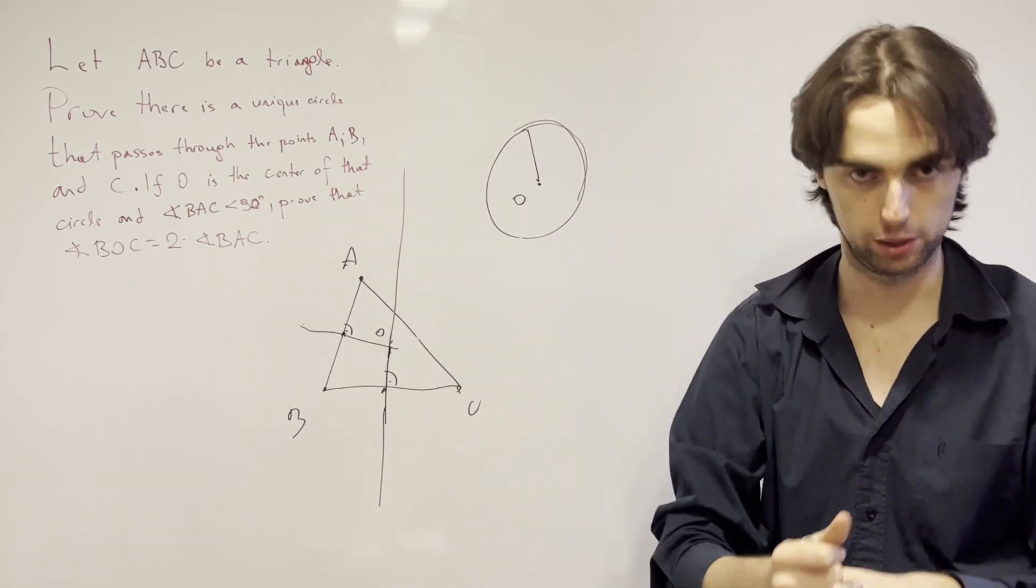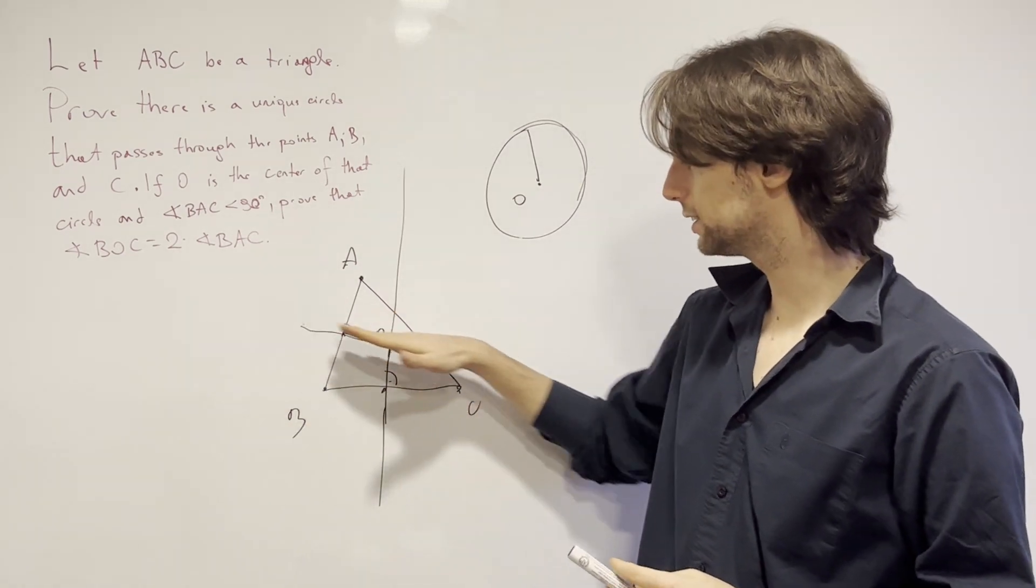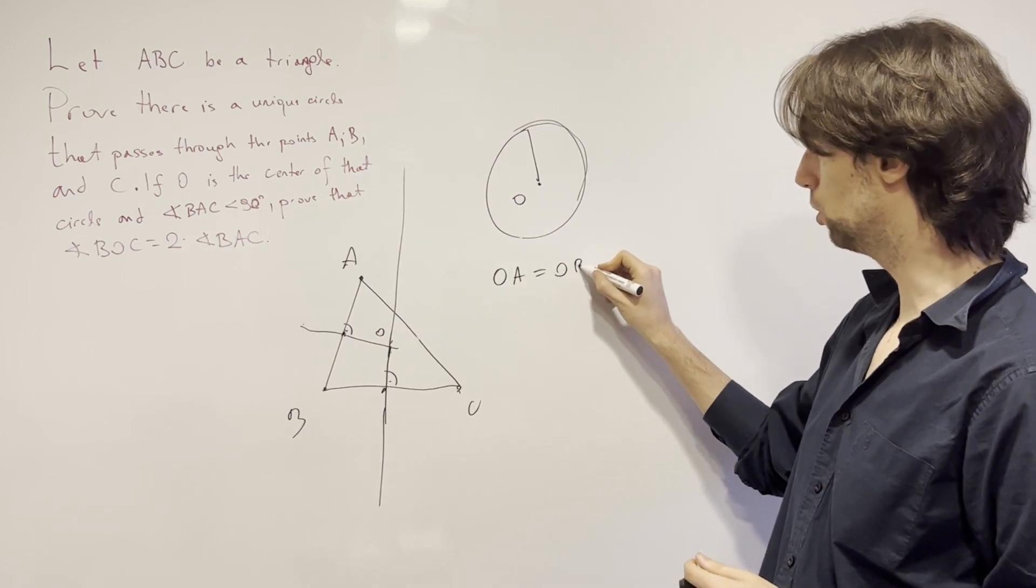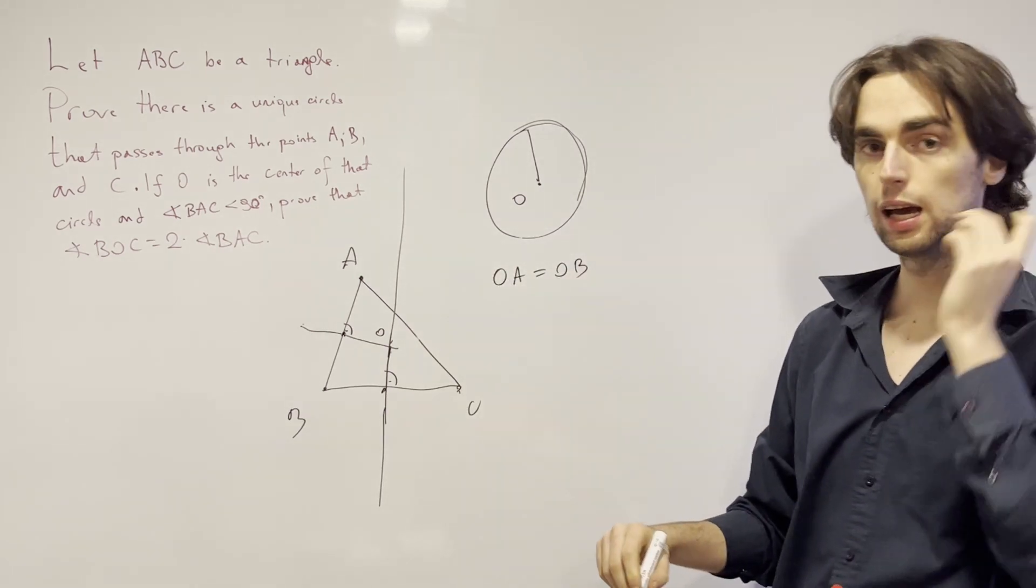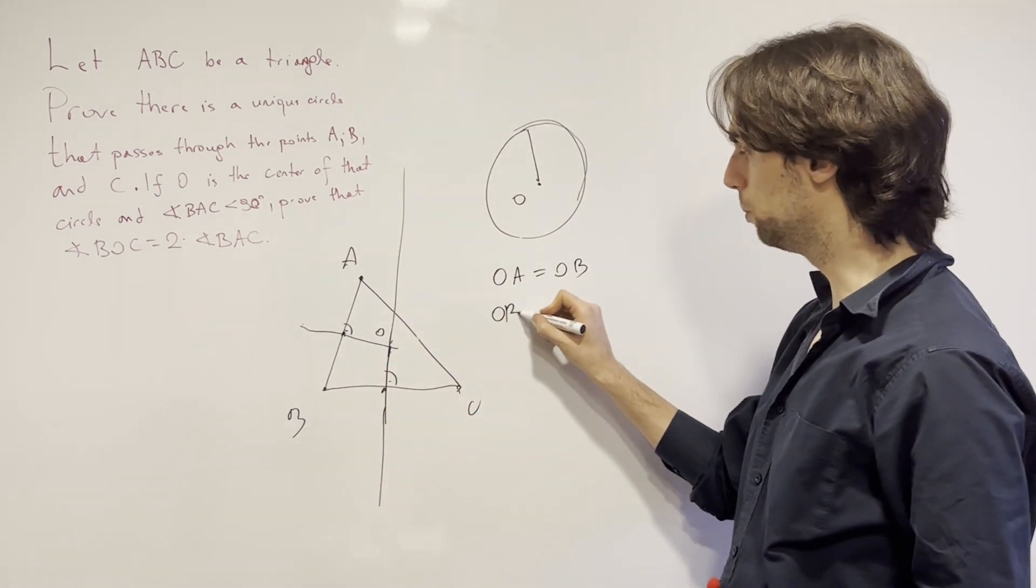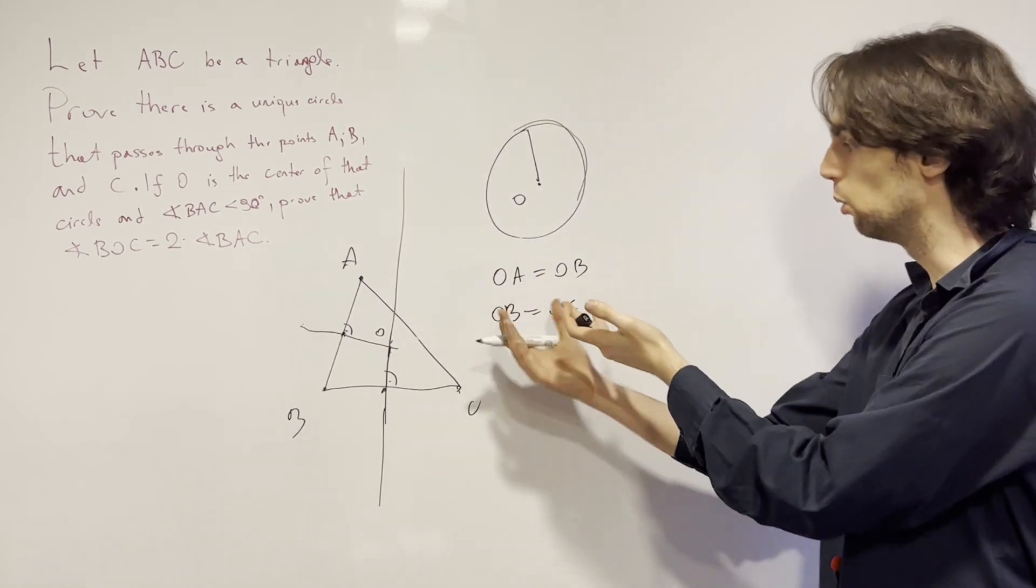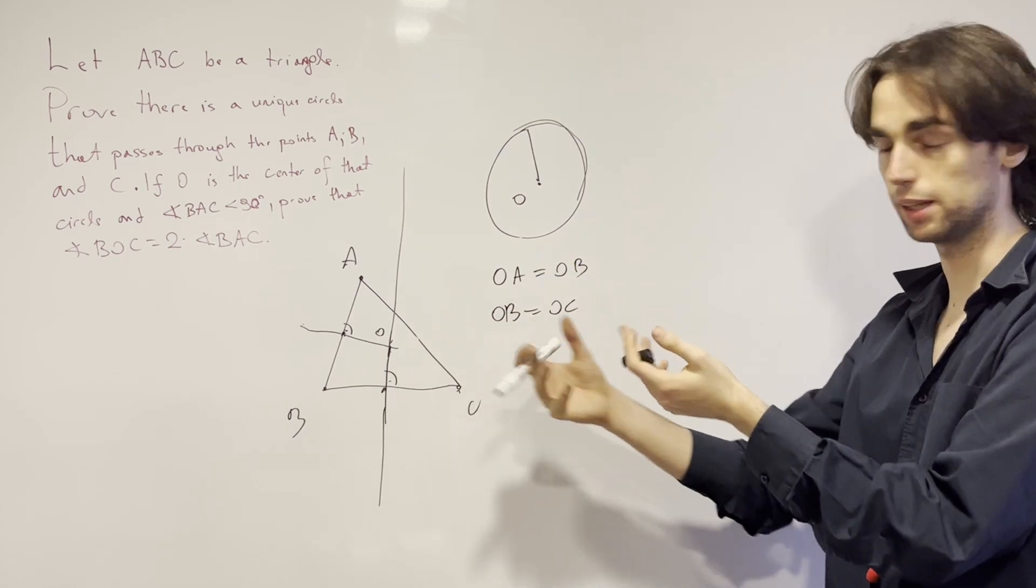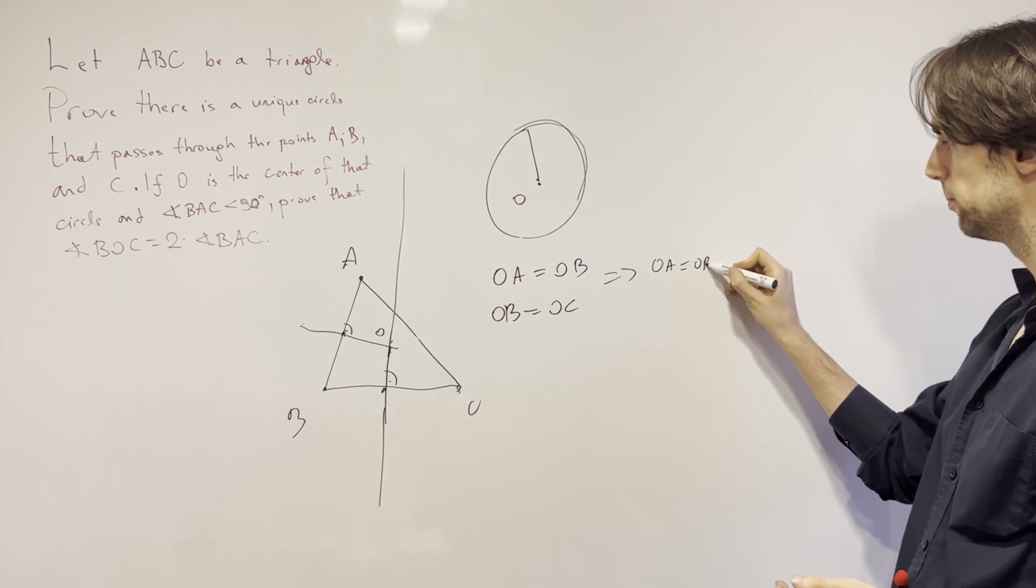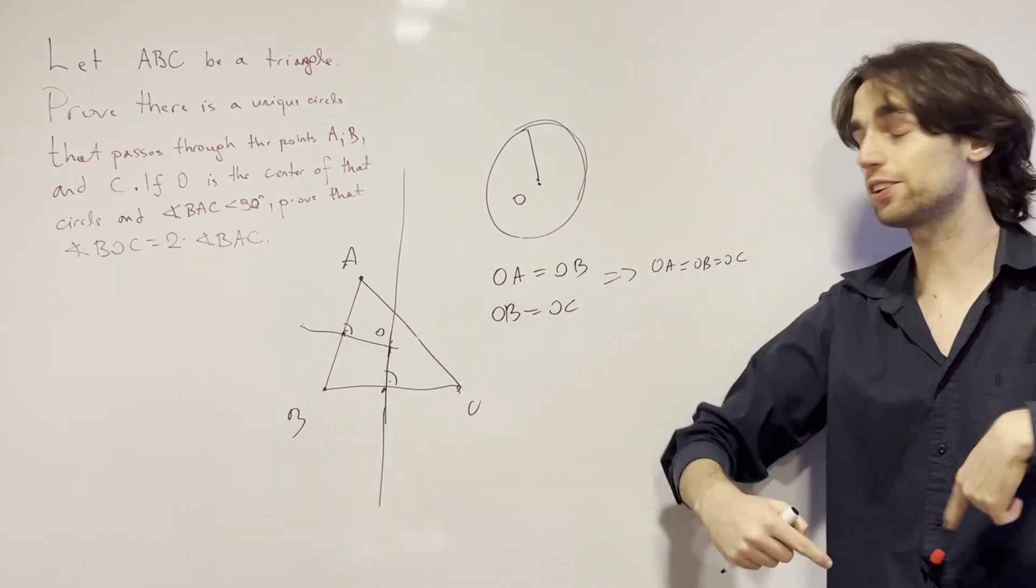And how can we show this? And the answer is, because O is on the side bisector of AB, that means OA is equal to OB. And on the other hand, because it's on the side bisector of BC, that means that OB is equal to OC. But OB and OC are the same. OB and OB are here the same thing. So we have OA is equal to OB is equal to OC. So we know that a circle exists.